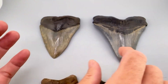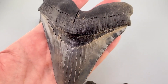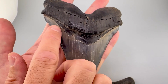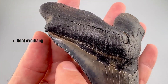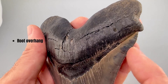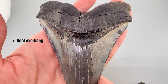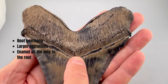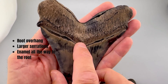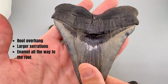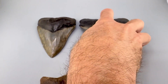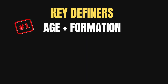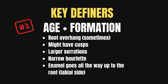You can get even larger, and they get even harder to tell. This one here is a monster tooth, probably 5.2 to 5.3 inches — a huge Chubutensis, again out of that mid to late Miocene formation. Take a look at the root: see these little overhangs on the root on both sides? That's a very telltale sign of a very late Miocene tooth. Larger serrations on average, enamel goes all the way up, and a slightly different shape and texture to the root. The key takeaway to Chubutensis versus Megalodon is just know the age.